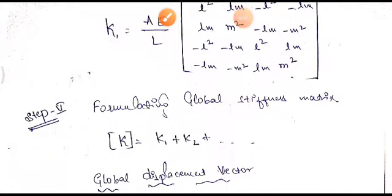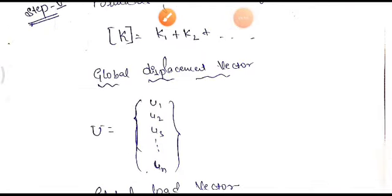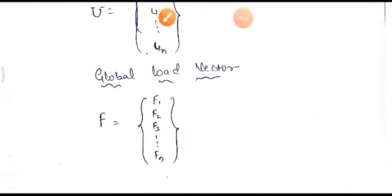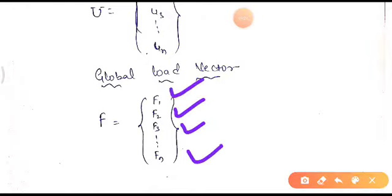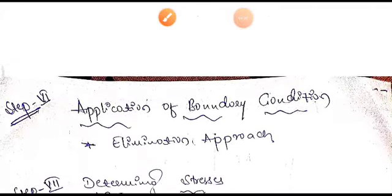Once the stiffness matrix is defined, we form the global stiffness matrix by adding the stiffness matrices for each element: K = K1 + K2. We also define the global displacement vector (u1, u2, u3, u4) and the global load vector, which contains the loads acting at each node.